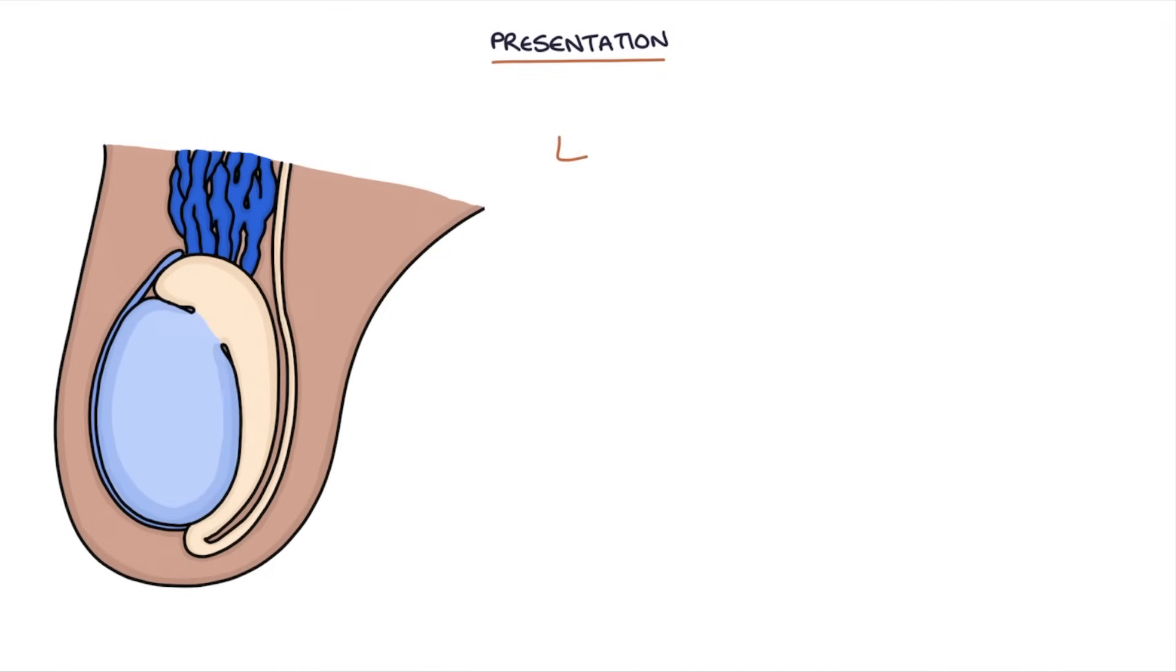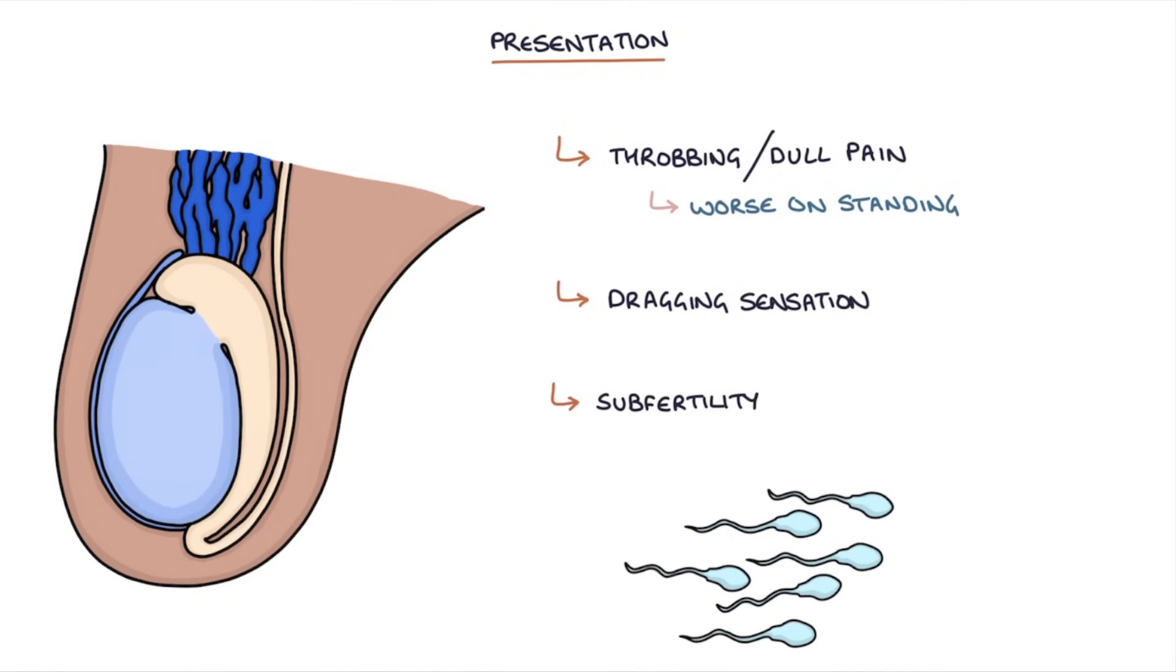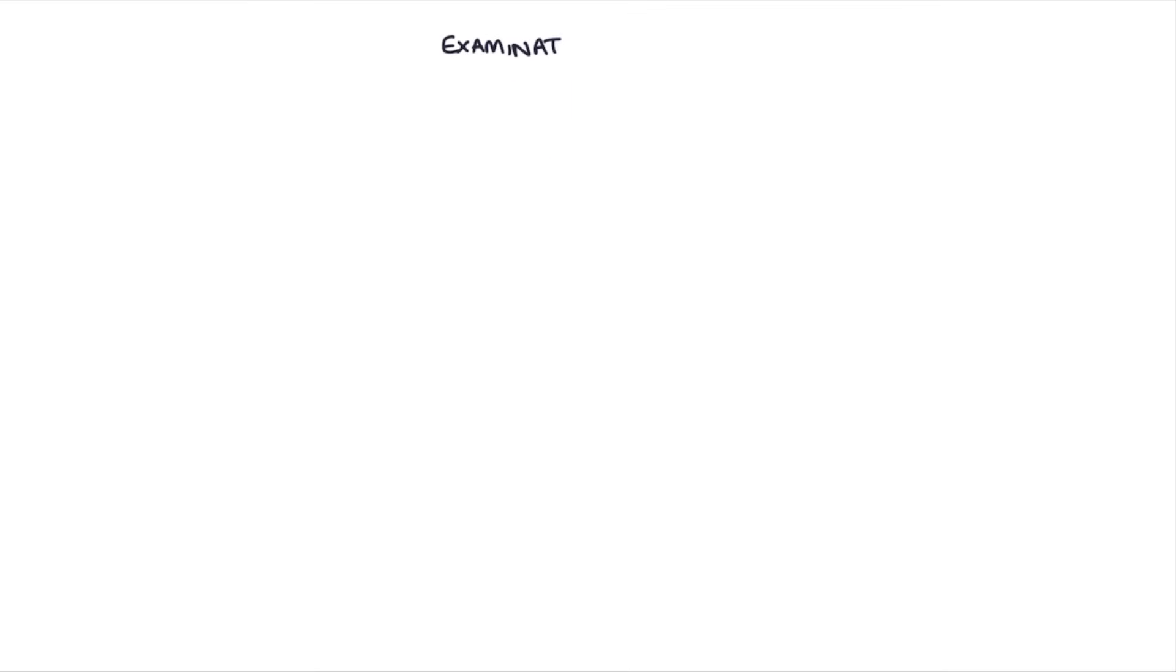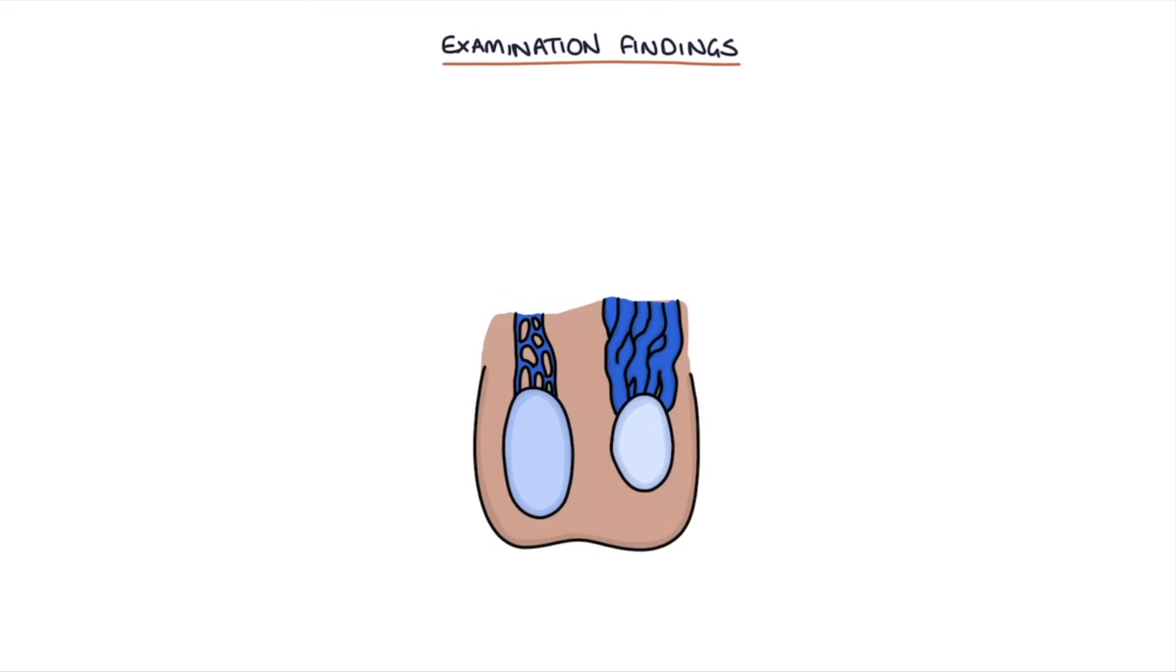Let's talk about the presentation of varicoceles. Varicoceles may present with throbbing or dull pain or discomfort that's worse on standing. They can lead to a dragging sensation in the scrotum and can also lead to subfertility or infertility. The examination findings of a varicocele are a scrotal mass that's often described as feeling like a bag of worms. They can be more prominent on standing and disappear when lying down.